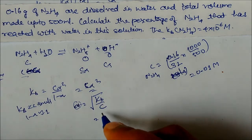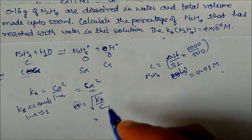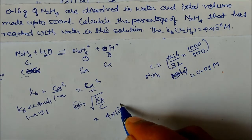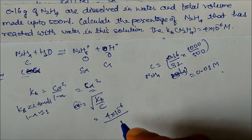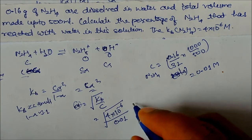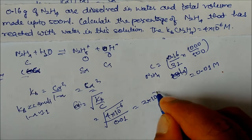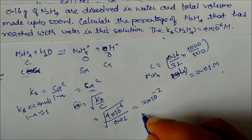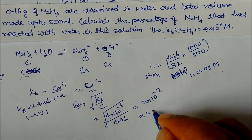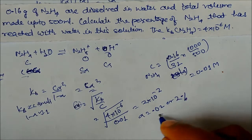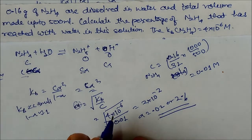Putting in Kb = 4×10⁻⁶ divided by C = 0.01, then taking the square root: α = √(4×10⁻⁴) = 2×10⁻². So alpha equals 0.02 or 2%. This is our answer for the percentage of hydrazine that has reacted with water.